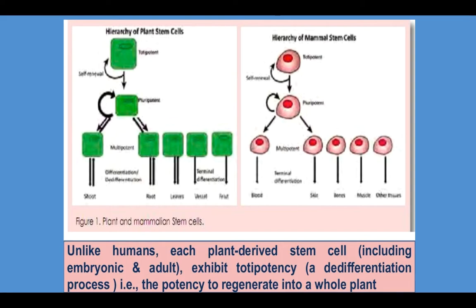This diagram shows the difference between the hierarchy of plant and animal stem cells. Here you can see that unlike humans, each plant-derived stem cell, including whether it is embryonic or adult, exhibits totipotency — that is, the potency to regenerate into a whole plant.